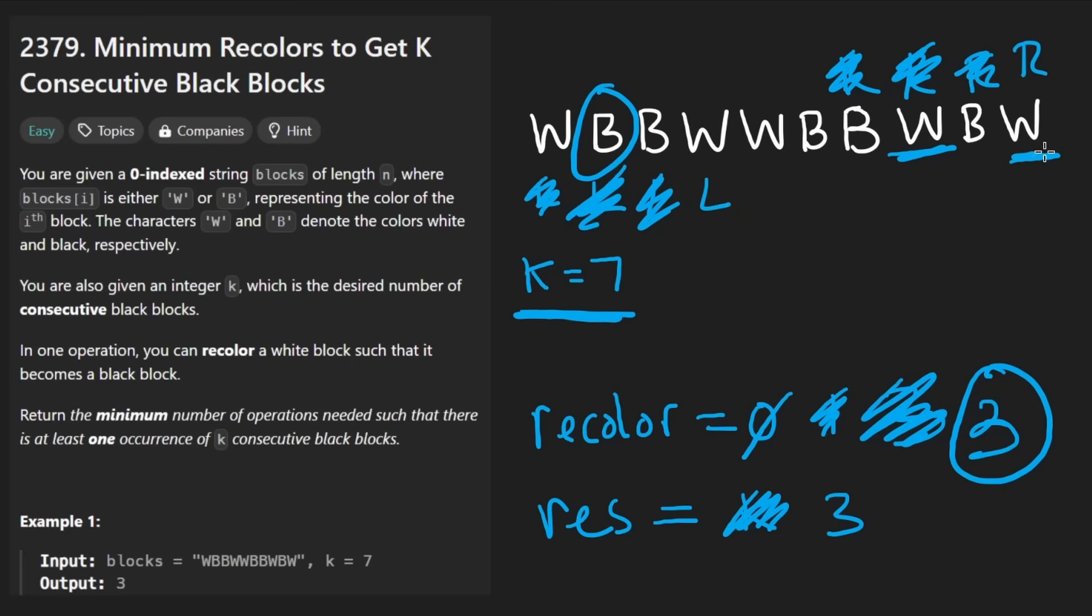Now we actually increment the number of whites, it's going to be four now. And that's definitely not smaller than the result, so now we keep going. Left is going to be over here, and now right is going to be out of bounds, so we are done with that. This was a linear time solution and constant space.